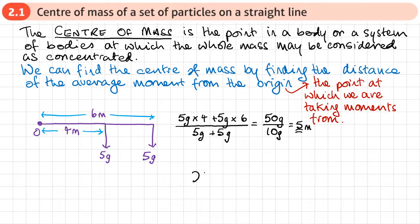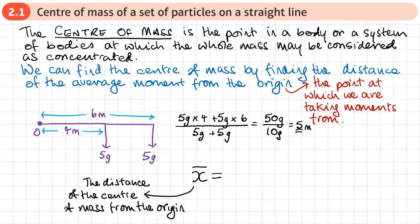This average distance, which I'm calling X bar, basically represents the distance of the centre of mass from the origin. And normally that's the point at which we're taking moments from. It may be different on different questions, but for this one, we'll take moments from the origin. So X bar represents that distance. In the example that we did, the value of X bar was five.